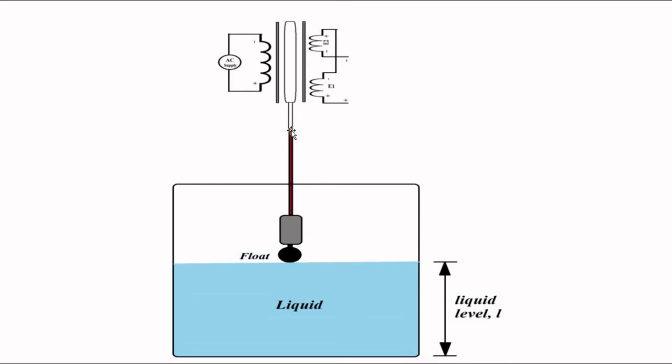This float, as it moves up and down, is connected to this movable core. As a result, this core moves up and down away from the center position, resulting in a change in the degree of coupling of the primary winding with the two secondary windings. We will get a non-zero differential output voltage. So depending on the magnitude of the output voltage and its sign, we can determine at which position the float or the core is present. That is the basic operating principle.